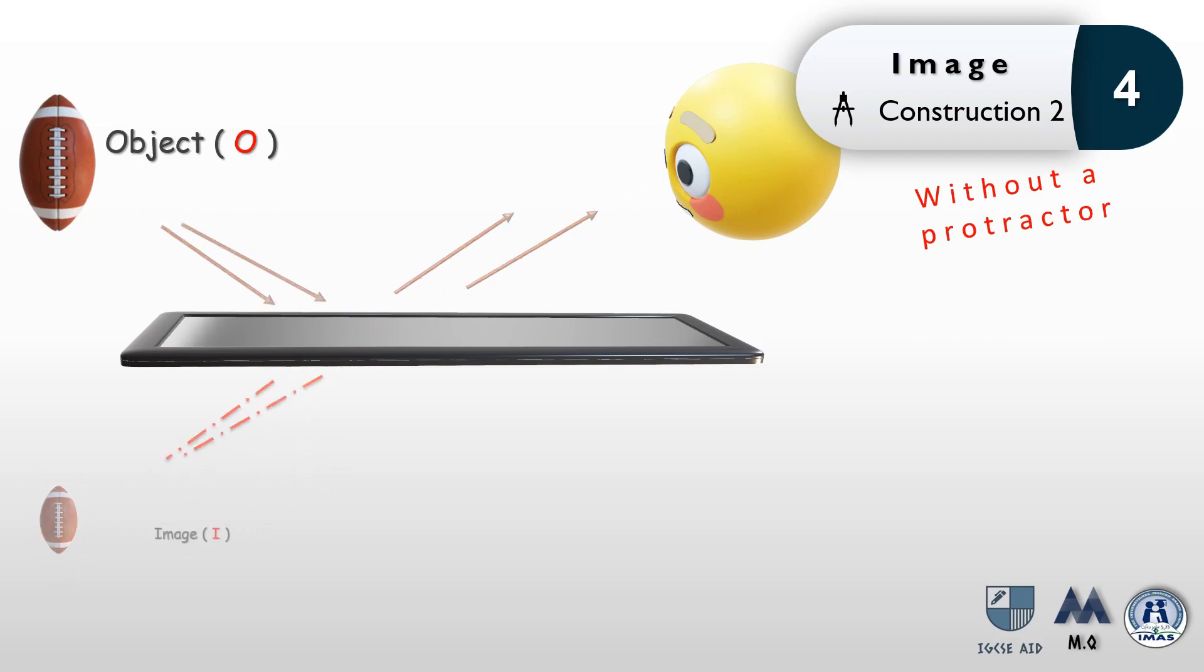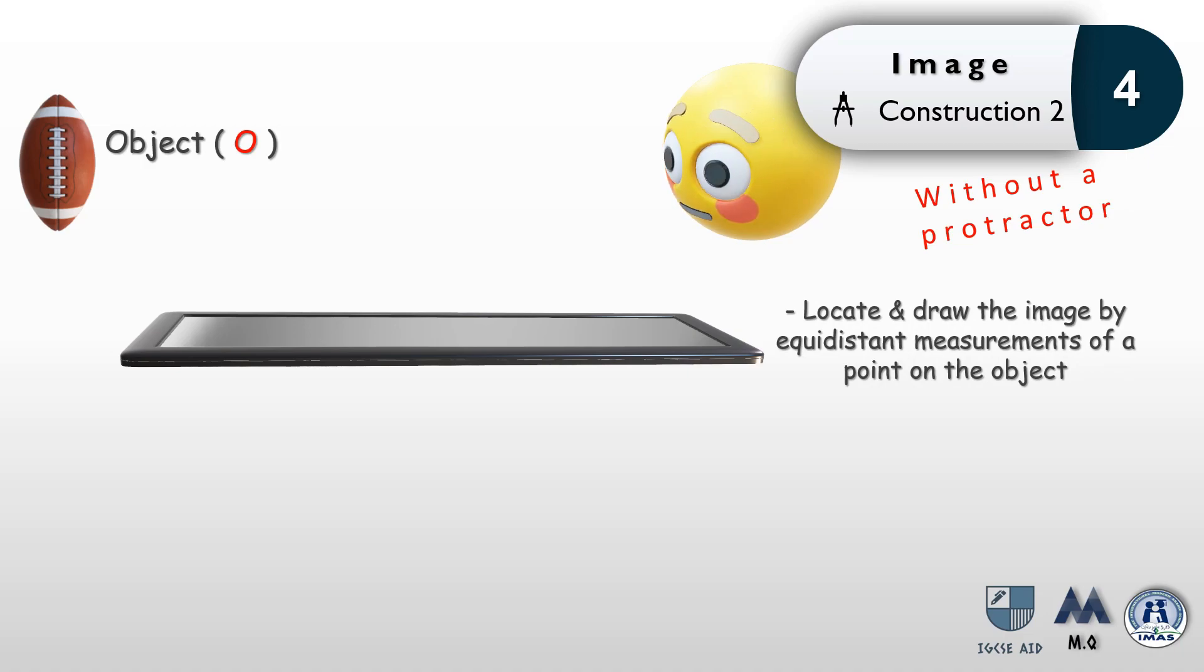The last thing in today's lesson is looking at a new way to construct the image without the use of a protractor. To do this, you need to locate and draw an image by equidistant measurements from a point on the object as shown. You draw a straight line from the object that crosses the mirror surface at an angle of 90 degrees, and the distance from the object to the surface of the mirror must be the same as from the surface of the mirror to the image.